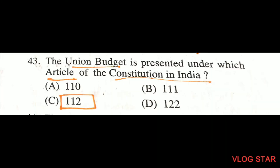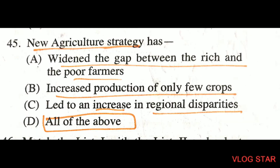Question number 43: the Union Budget is presented under Article 112 of the Constitution of India. Question number 45: the new agriculture strategy has all of these effects — it widened the gap between rich and poor farmers, increased production of only a few crops, and led to an increase in regional disparities.